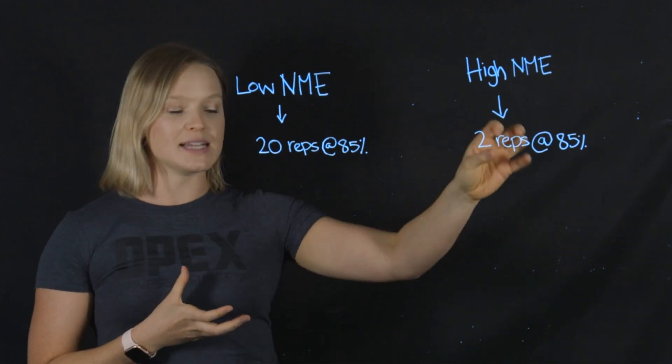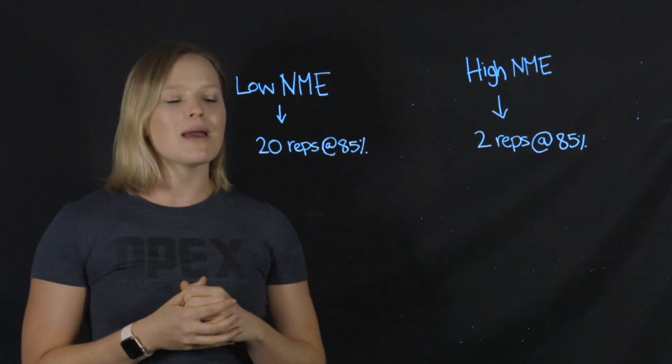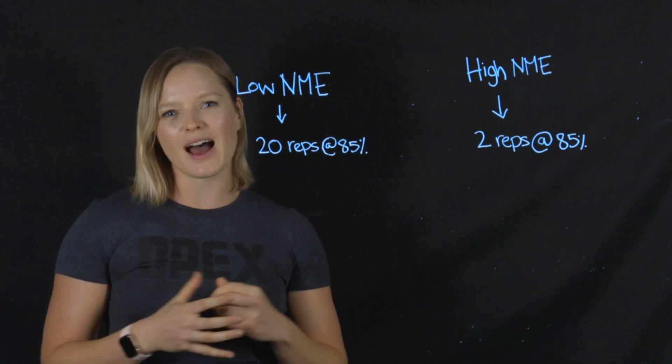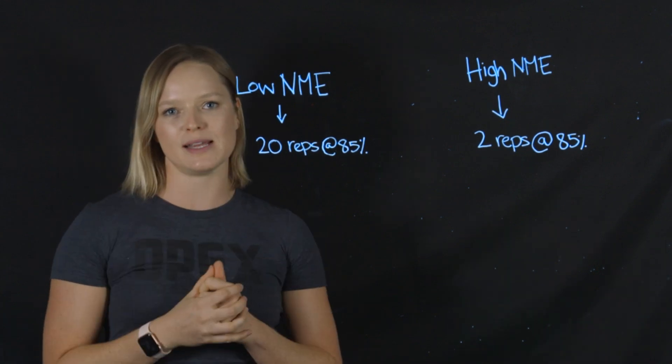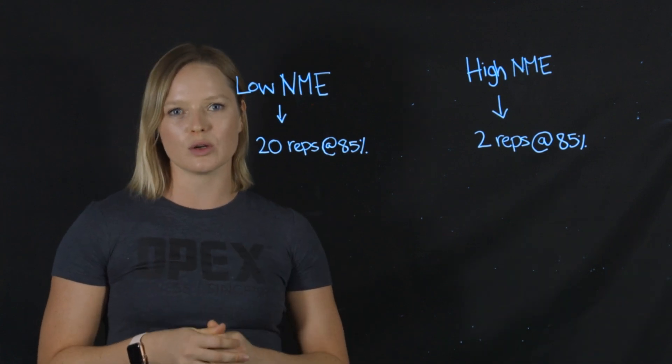Their repetitions, their volume is going to be lower, and the percentage that I prescribe relative to that is going to be lower as well. Maybe we'll have them do three sets of three reps at 70% of their one RM, and that's going to be a more appropriate strength endurance dose for them.